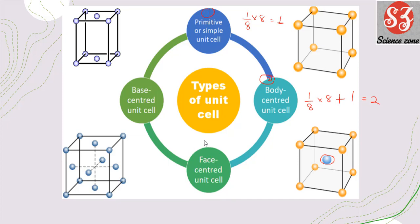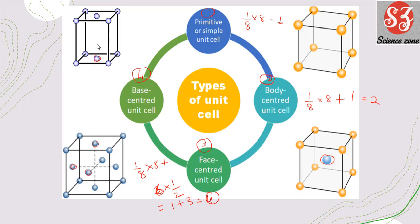The third type is the face-centered unit cell, which has atoms at corners and one atom on each face. So: (1/8 × 8 corners) + (1/2 × 6 faces) = 1 + 3 = 4 atoms total in FCC. The fourth is the base-centered unit cell, which has atoms at corners plus half an atom on the top and bottom faces. So: (1/8 × 8) + (1/2 × 2) = 1 + 1 = 2 atoms. These are the four types of unit cells.